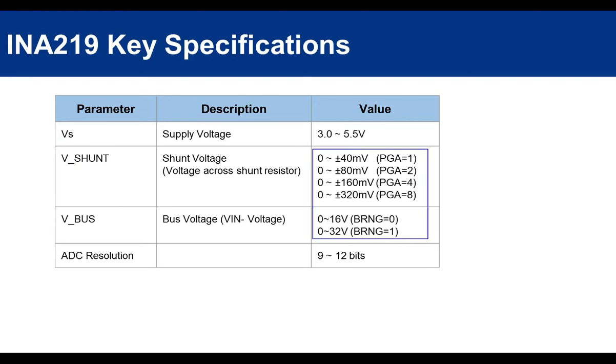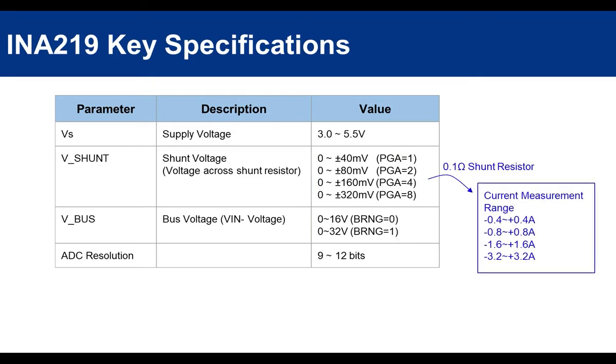The measurement range of these voltages are configurable by programming the registers through the I2C channel. The current measurement range can be determined by these settings and the value of the resistor we use for the shunt resistor. For example, if we use a shunt resistor value of 0.1 ohm as in our module, the current measurement range are as shown here.